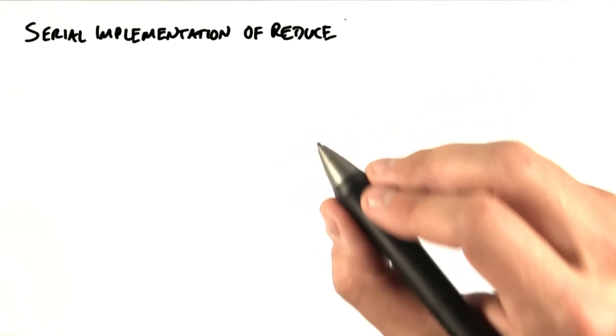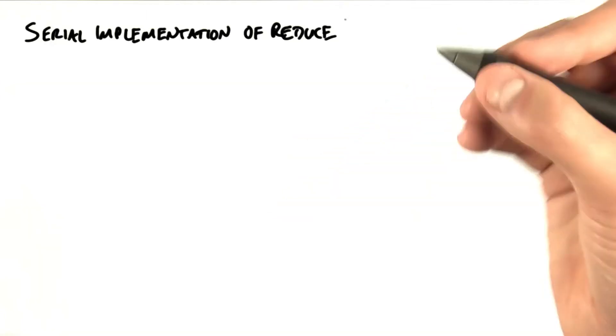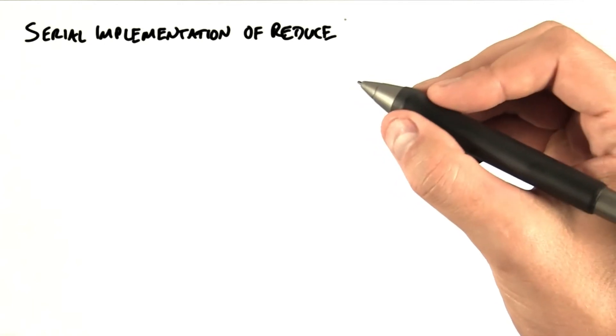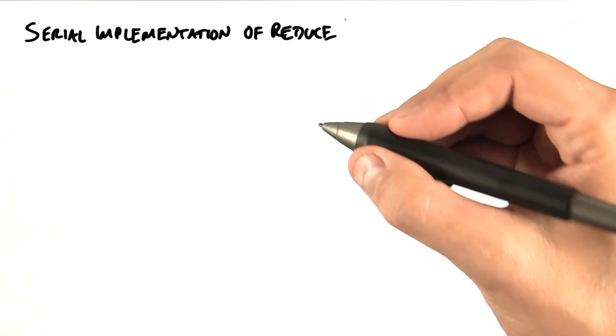So now we're going to discuss how you implement reduce in a serial way, sort of the traditional way that we all know and love. And so the structure of this looks a little bit like map.